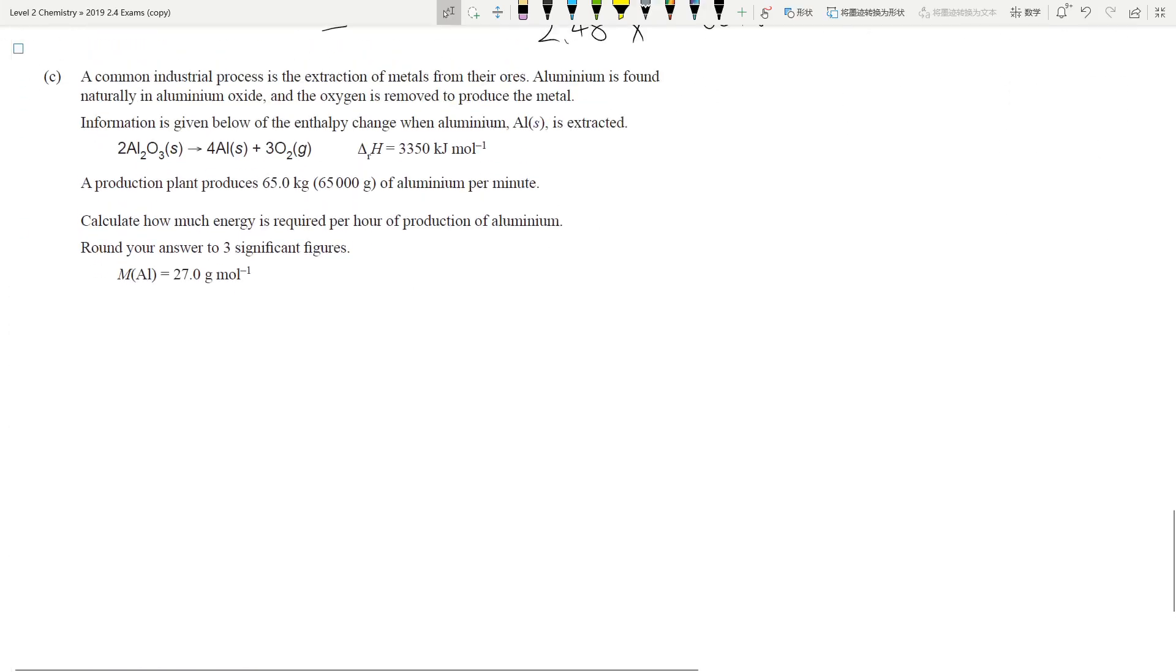Now, last one. So, more calculations. A lot of calculations. That means less writing. So, let's think about this. I'm not going to bother reading those. Let's just, this is the key thing. Now, in chem, all the numbers that we give you, you tend to need to use them at least once. Mostly, just once. Don't double dip. Once is enough, we've got the molar mass. So, first thing first, what do we have? We have a plant produces 65,000 grams of aluminium per minute. And then, calculate how much energy is required per hour of production. How much energy is required.